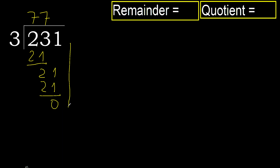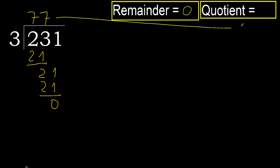Next — that is not a number, therefore finish it. So 231 divided by 3 is 77.